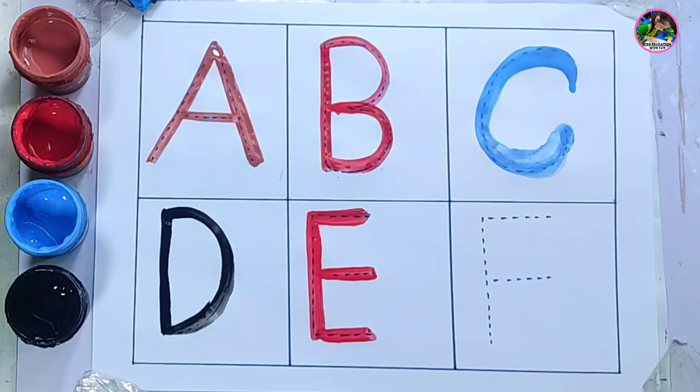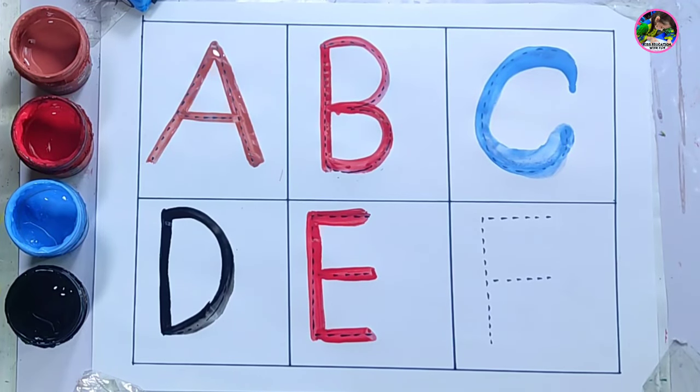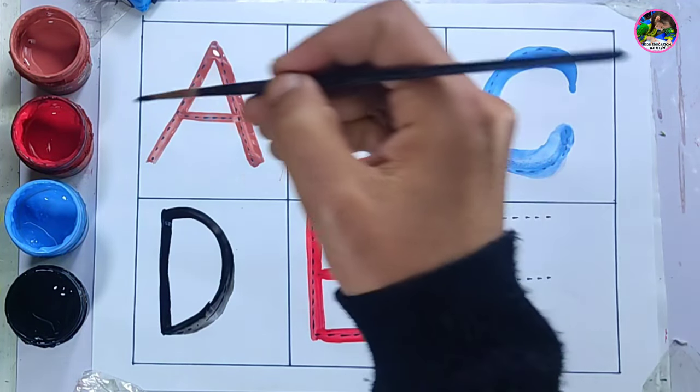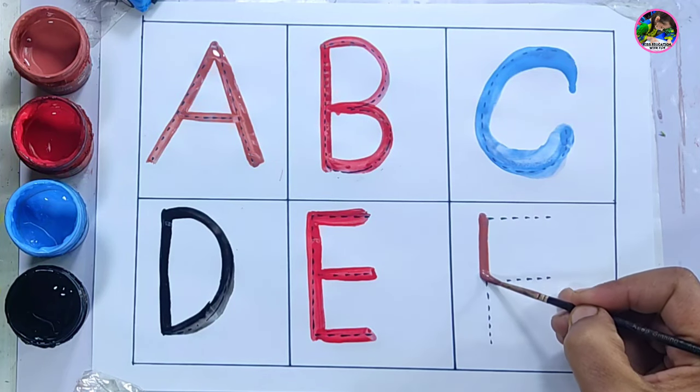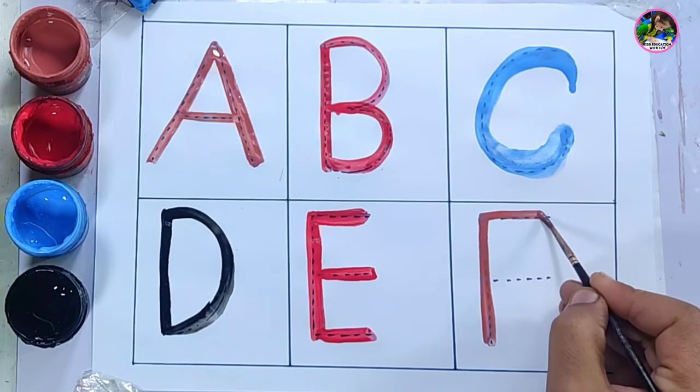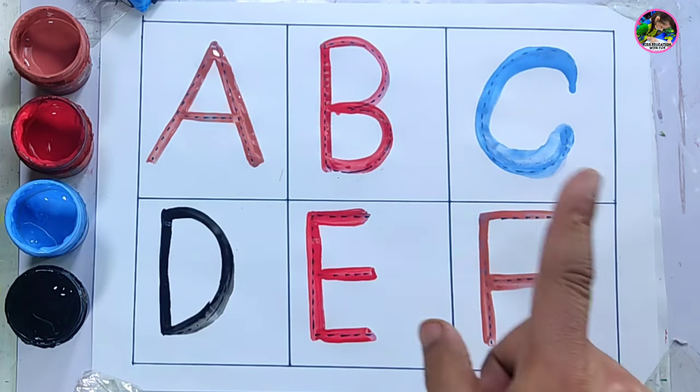Elephant means haati. And this is letter F. F is for fish. Let's choose brown color. Letter F. This is letter F. F is for fish. Fish maana machli.